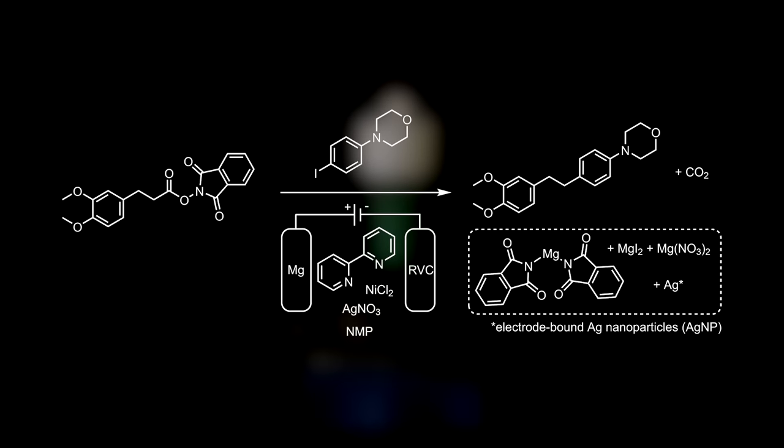What happens in this reaction is the decarboxylative arylation through silver nickel electrocatalysis. This produces the coupled product and carbon dioxide. Magnesium ions are led off by the sacrificial anode that produces magnesium phthalimide, magnesium iodide, and magnesium nitrate, while the silver nitrate is reduced to silver nanoparticles. To know how it works, we first have to establish a few things.